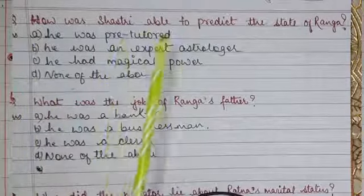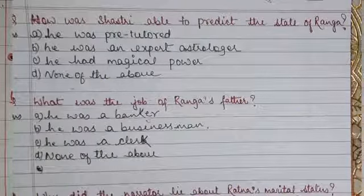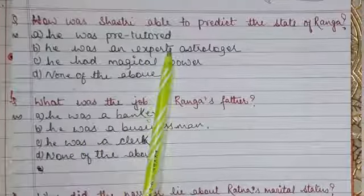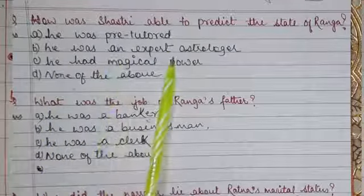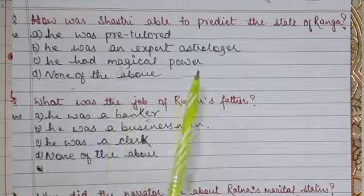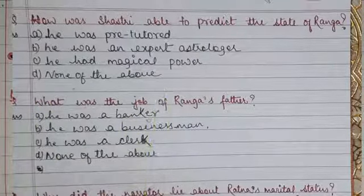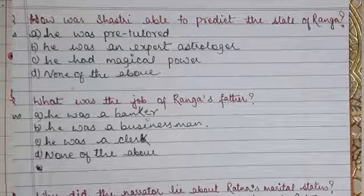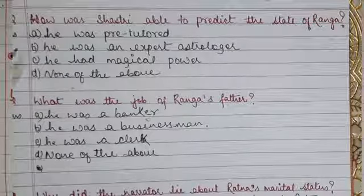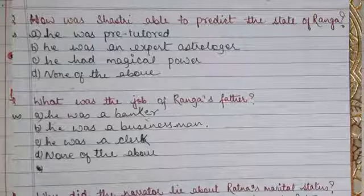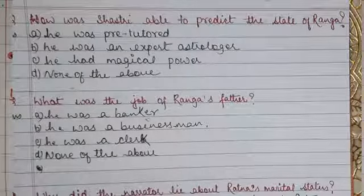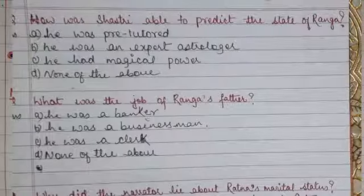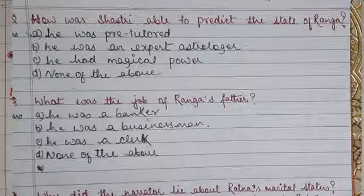How was Sastri able to predict the state of Ranga's mind? Option A: He was pre-tutored, Option B: He was an expert astrologer, Option C: He had magical power, Option D: None of the above. Option A is correct — he was pre-tutored. You might be confused with Option B, but according to the story we don't find any instances where he shows he is an expert astrologer. The story only tells us he was tutored by the narrator, so we stick to that answer.